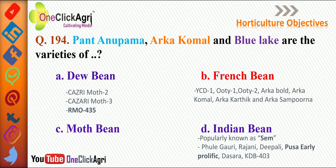Dew bean and Moth bean are similar names to each other. Varieties of Moth bean include Kajri Moth 2, Kajri Moth 3, and RMO 435 — please remember this variety. Indian bean, popularly known as Same, has varieties: Phule Gauri, Rajeni, Dipali, Pusa Arli Prolific, Dasara, and KDB 403. Please remember Pusa Arli Prolific as an Indian bean variety.